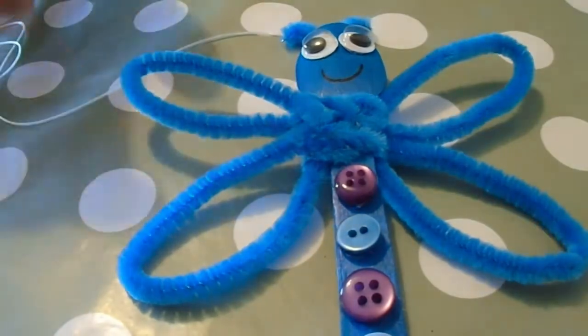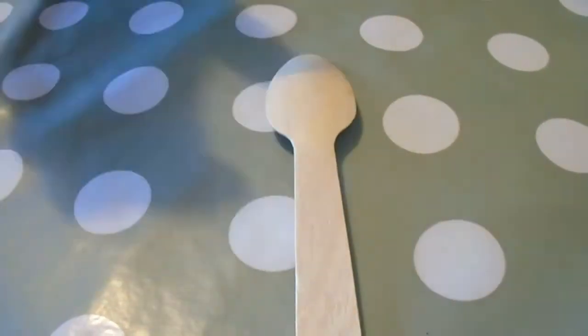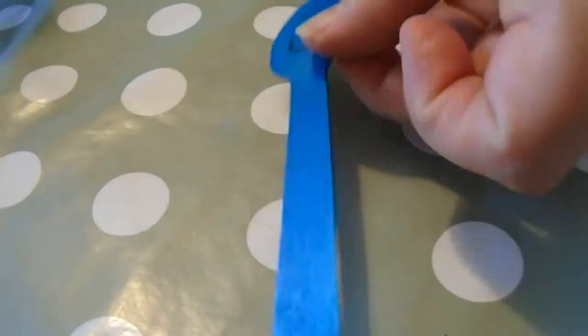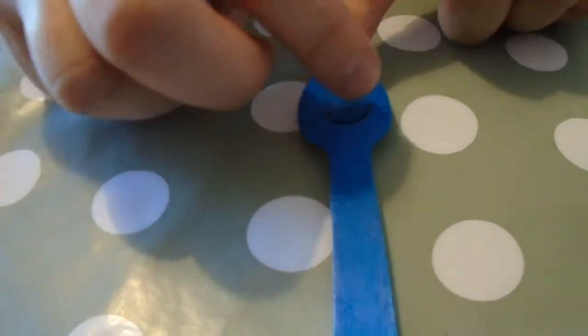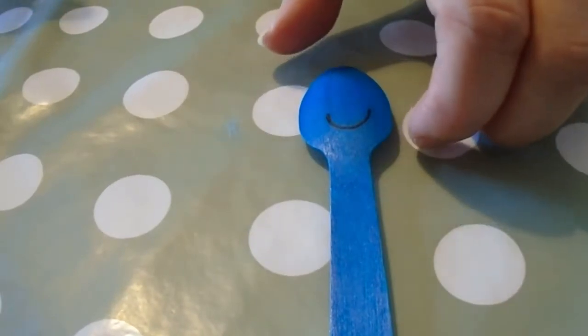I'm going to show you how to make this damselfly now. First of all, you start with the wooden spoon which you color in or paint. We painted ours and I've also at this stage, once it was dry, I drew in a mouth using a permanent marker.